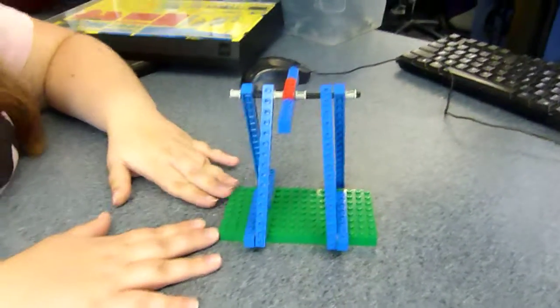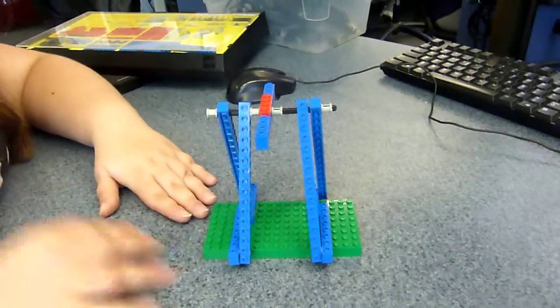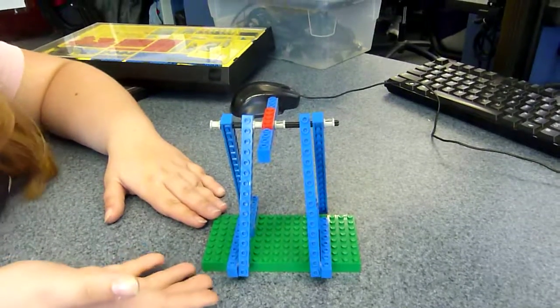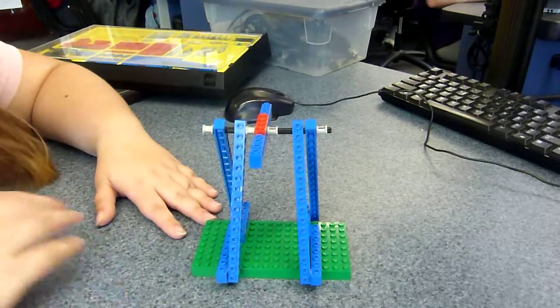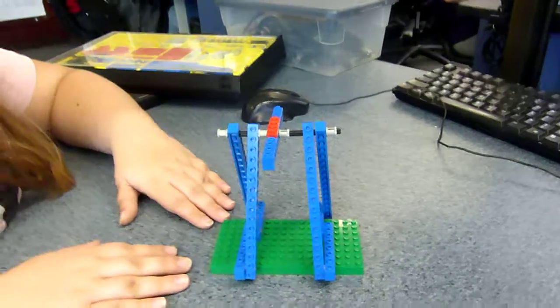In this tutorial, we are going to show you what this machine is. We have built this swing, and this swing is a complex machine. A complex machine is two simple machines in one.